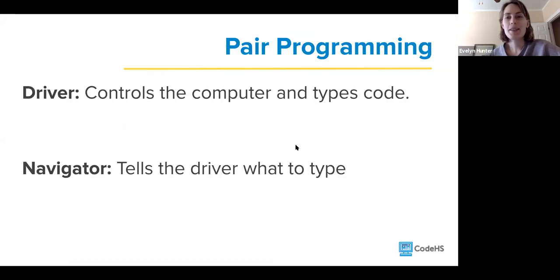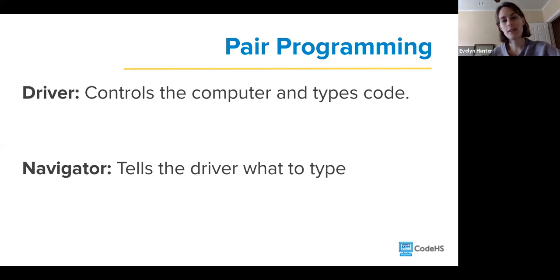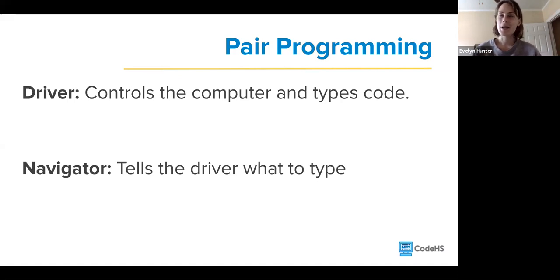In this model, there are two roles: the driver and the navigator. The driver controls the computer and actually types the code, while the navigator sits next to the driver and tells them what to type. The navigator is thinking about the high-level, big-picture problem approach, and the driver listens and executes — though they can question the navigator's approach, and any disagreements should be talked through.